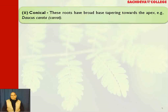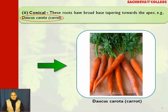Conical roots have a broad base tapering towards the apex. An example is carrot, with botanical name Daucus carota. Carrot is rich in carotene, and carotene is the precursor of vitamin A. So people having a deficiency of vitamin A should consume carrot, because carotenoids are the precursor of vitamin A.